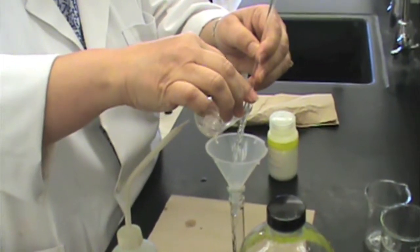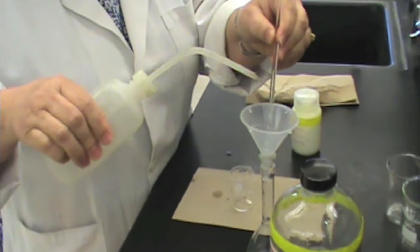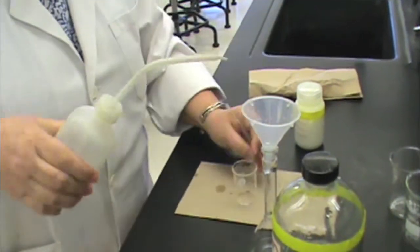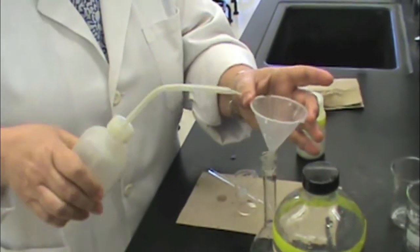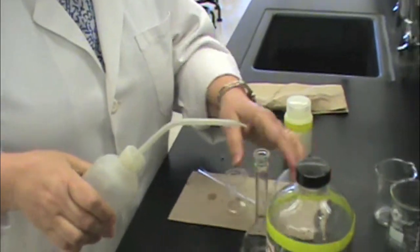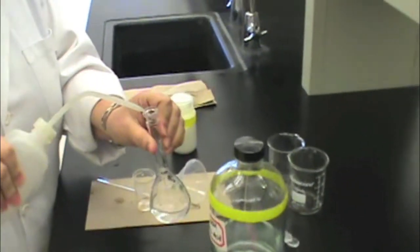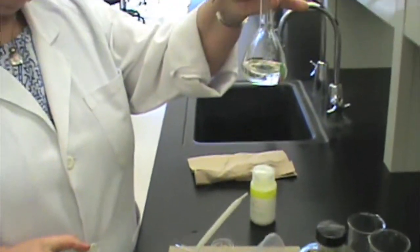Make sure that when you pour, you pour along the glass stir rod to transfer well. Then rinse your glass stir rod and your funnel to make sure that all of the solution is now in the volumetric flask. Then wash the sides of the volumetric flask so that all of the solution is at the bottom.